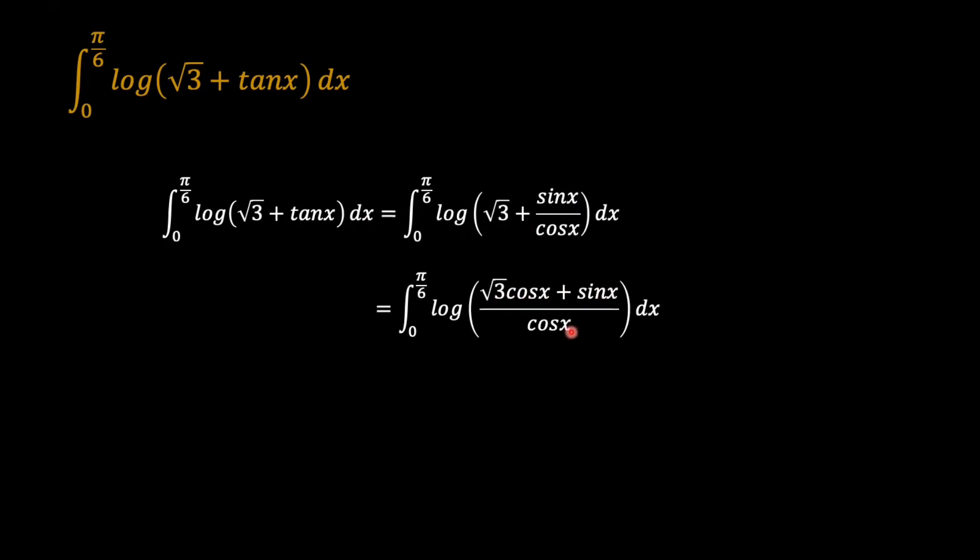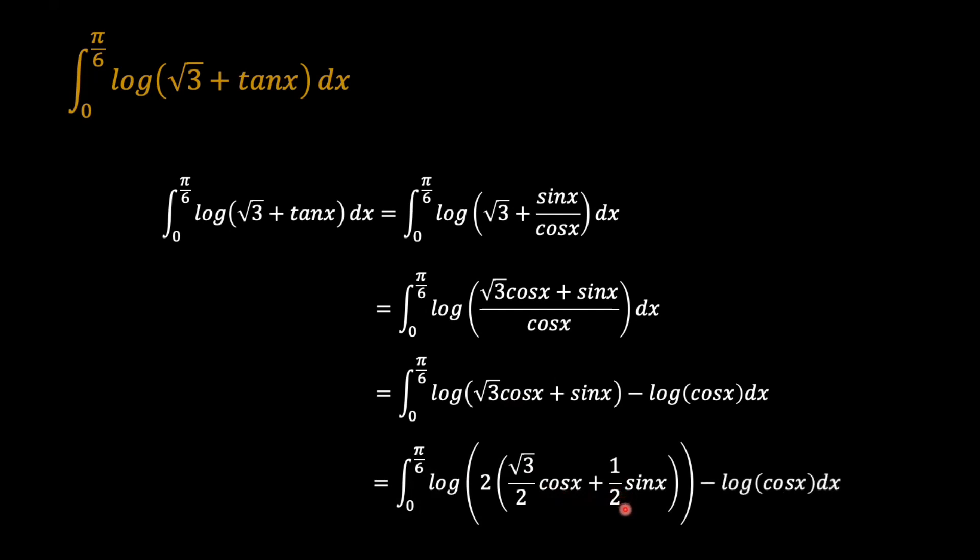Now using the rule of logarithms, we're going to subtract the log of cosine x from the root 3 cosine x plus sine x log. Now I would like to express this addition into a simple cosine function. And how I would go about doing that is first I will square root 3 and then add 1 squared, that is 4. Root of 4 is 2, so I'll pull 2 out and then divide root 3 by 2 cosine x plus 1 over 2.